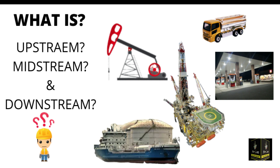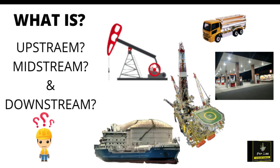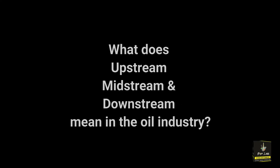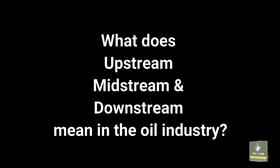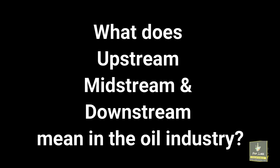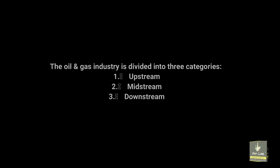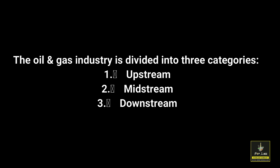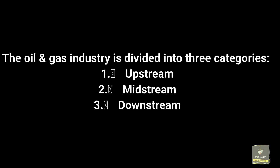Hello friends, today I'm going to tell you about upstream, midstream, and downstream — what does it mean in the oil and gas industry? Basically, the oil and gas industry is divided into three categories: upstream, midstream, and downstream.